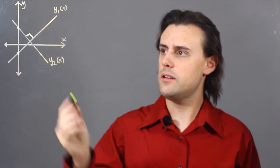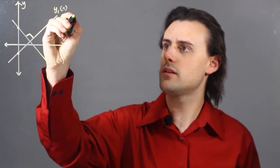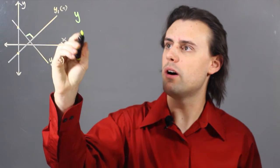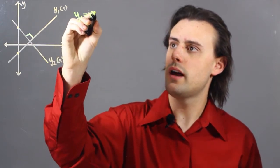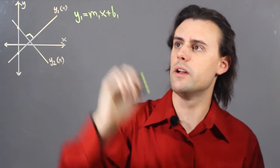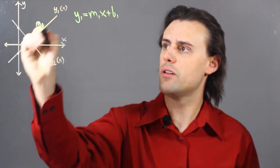And what I can do is write down the equation of the lines, so for my line y1, I have y1 is equal to m1x plus b1, where m1 is the slope of my first line.